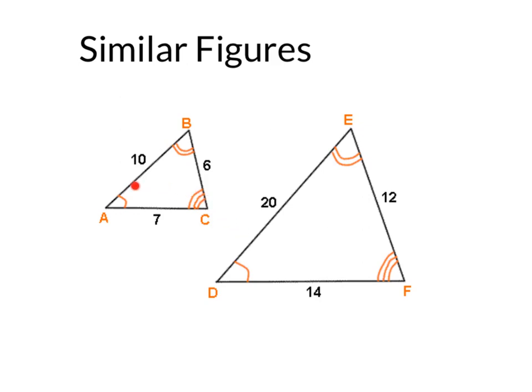We can see in these two triangles that angle A and angle D are congruent, one arch. Angle B and angle E are congruent, two arches. And angle C and angle F are congruent. Those angle measures are equal with three arches.